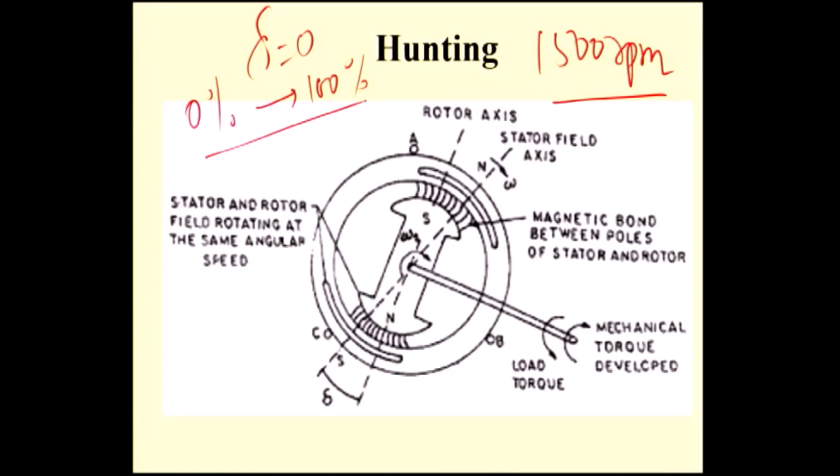What will happen? Immediately, the rotor retards by some angle. That means the rotor slows down. So the rotor tries to come out from synchronism — tries to come out from the magnetic locking with the rotating magnetic field.